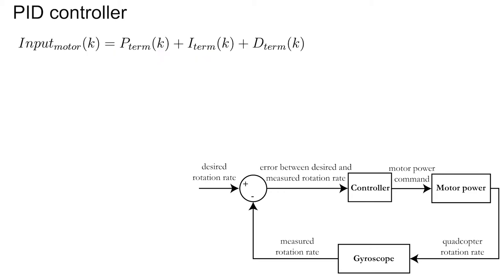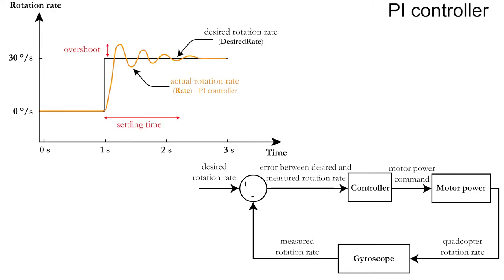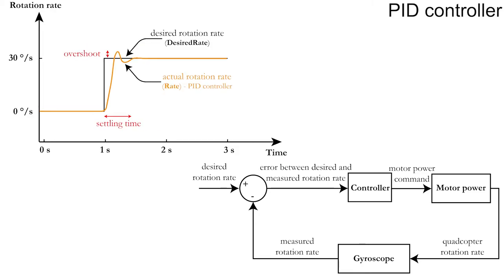Since the derivative along a function predicts its future value, this term will help to reduce overshoot and hence the settling time. Let's take the derivative of the error and multiply it with the constant D. A derivative can be discretized as well by subtracting the error in the current iteration with the error of the previous iteration and dividing the result by the duration of one iteration. Compared with the PI controller, a PID controller will have a smaller overshoot and settling time.